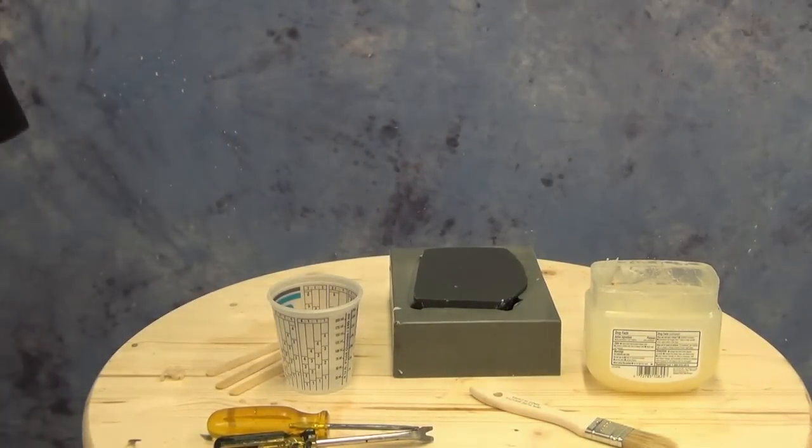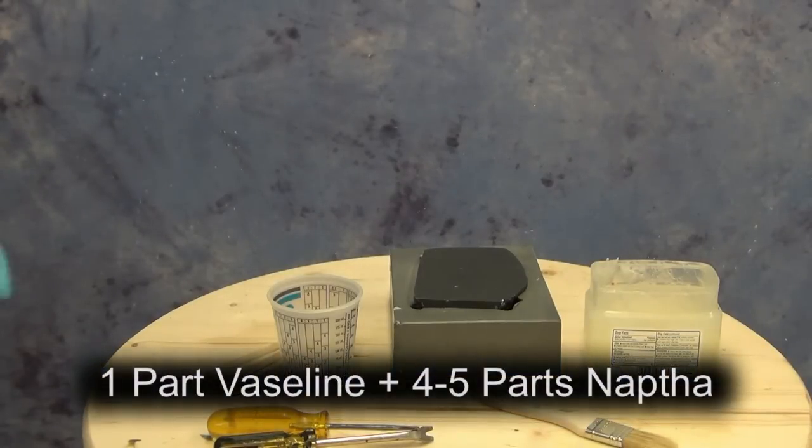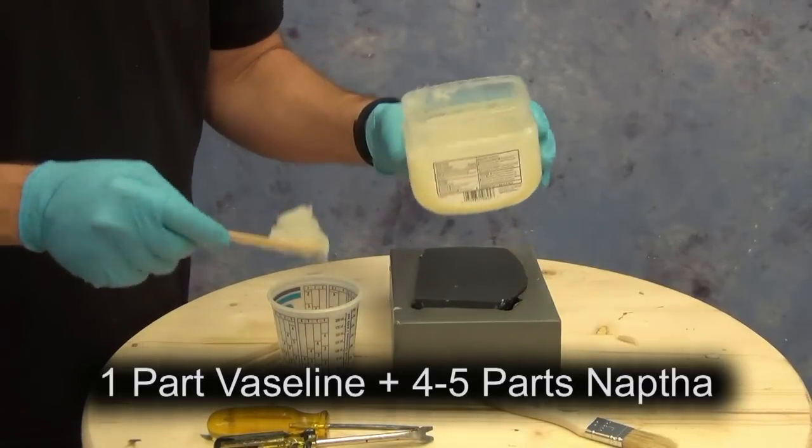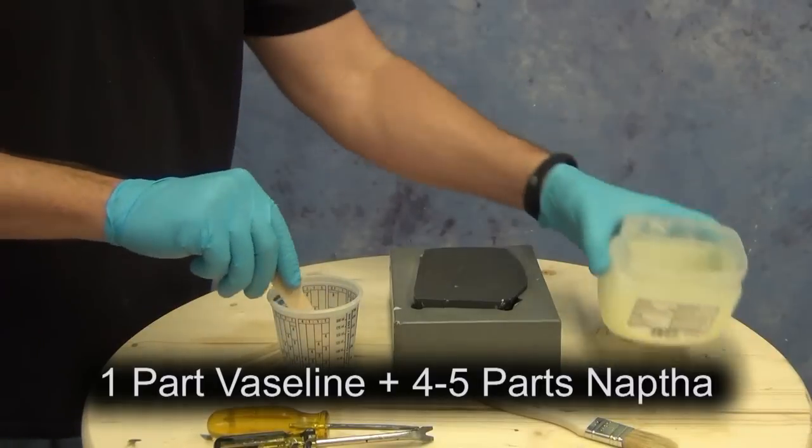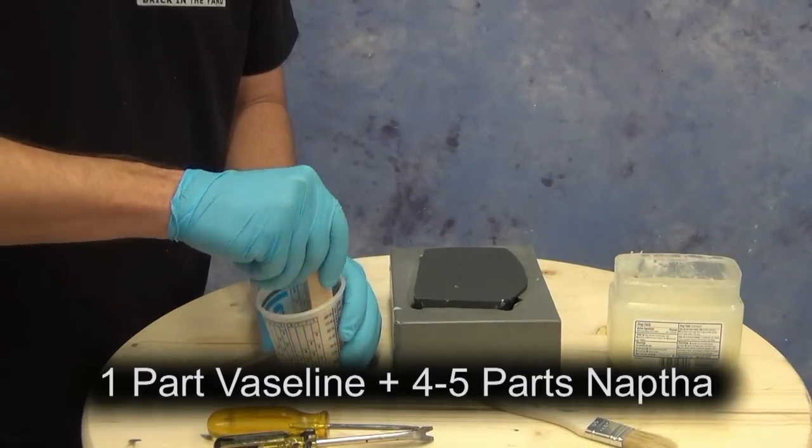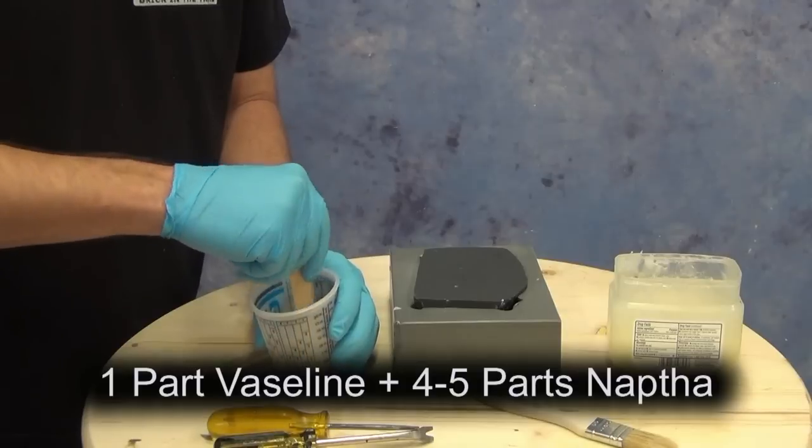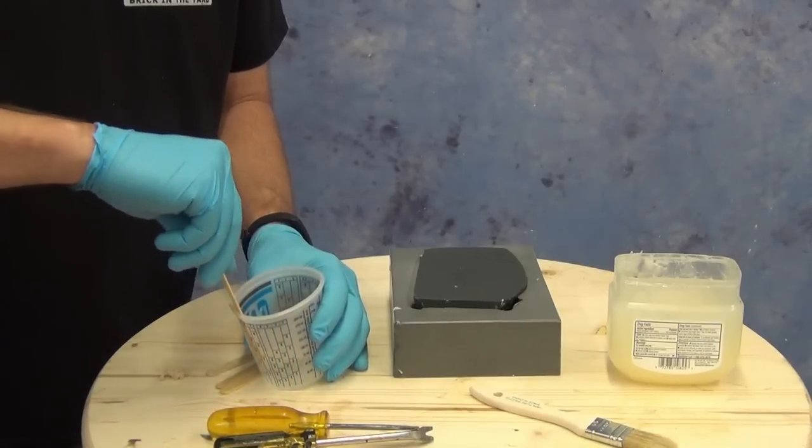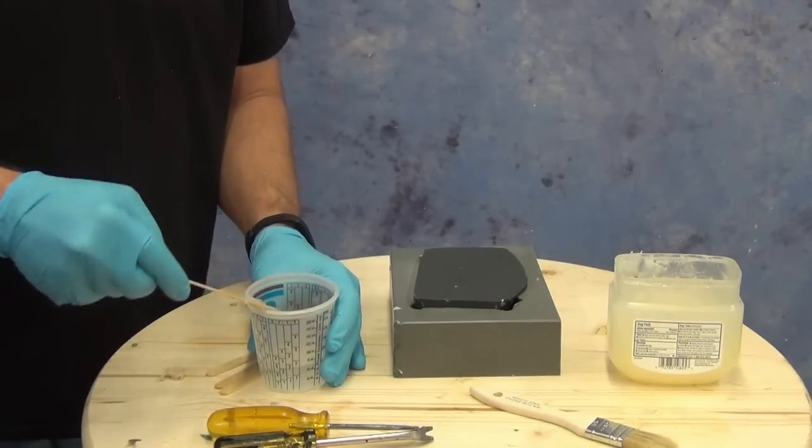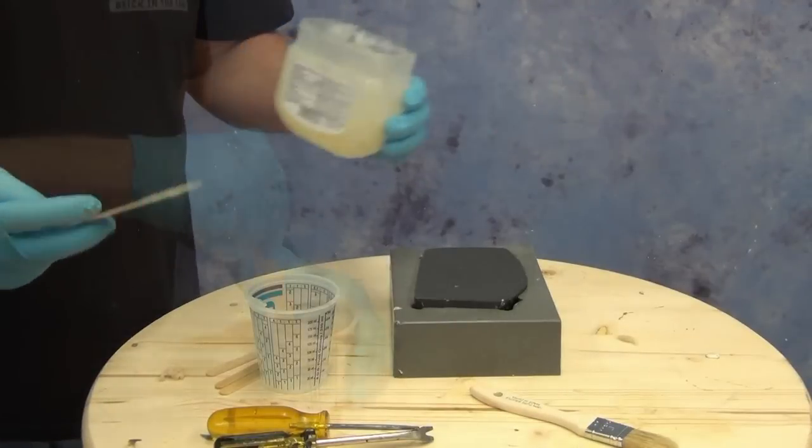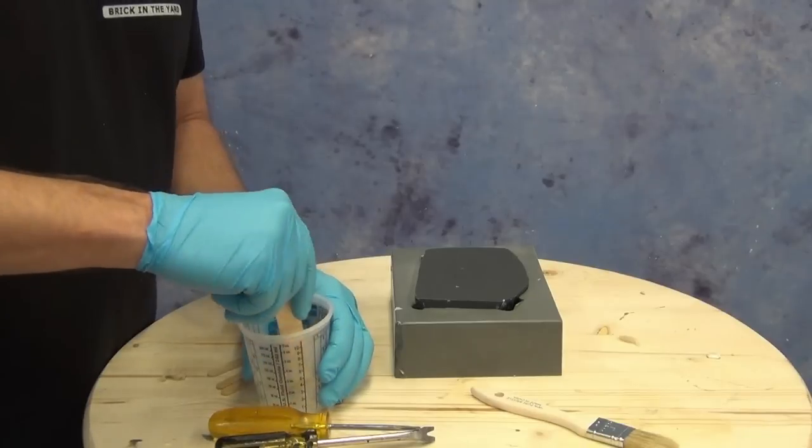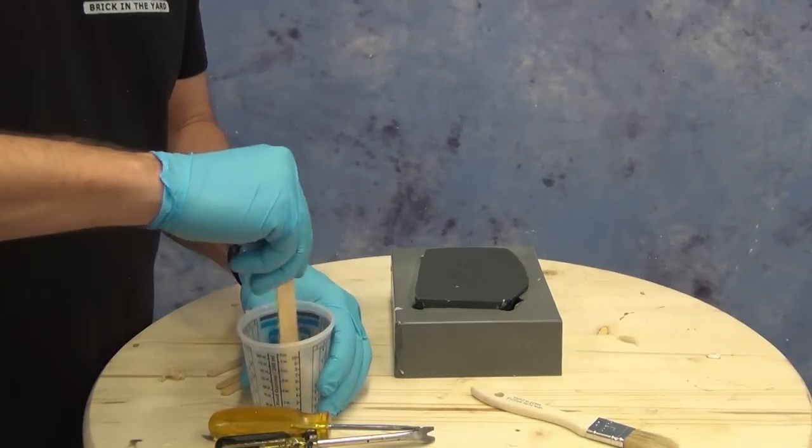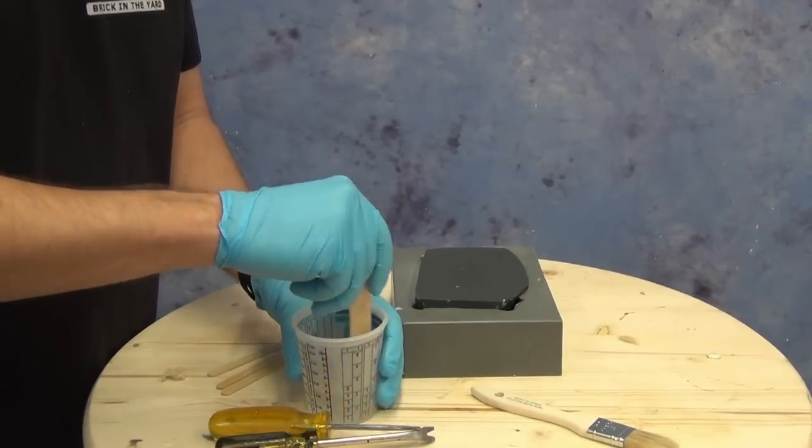To properly release the resin mold, we'll apply a homemade vaseline release in two steps. First, mix about one part vaseline to four to five parts naphtha or lighter fluid. You can also use Zippo lighter fluid if you don't have naphtha. Combine the vaseline in a polypropylene mixing cup with naphtha and stir slowly to avoid splashing, allowing it to turn into a vaseline solution.